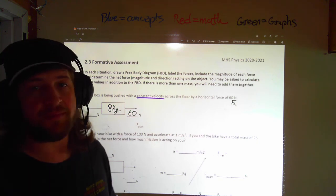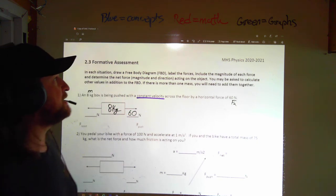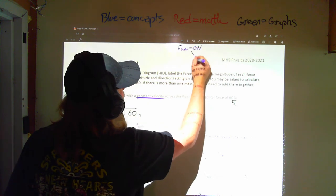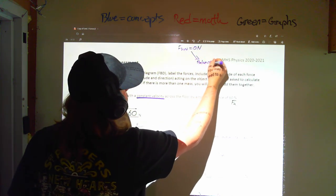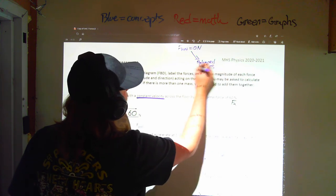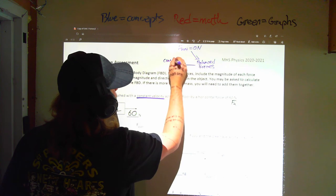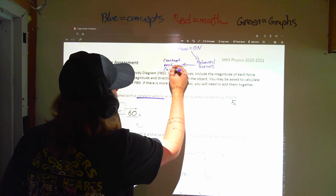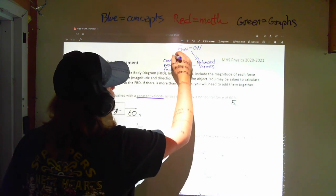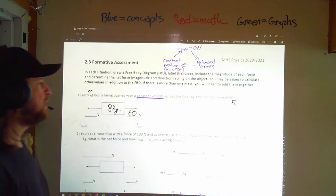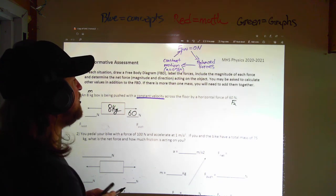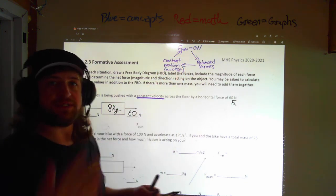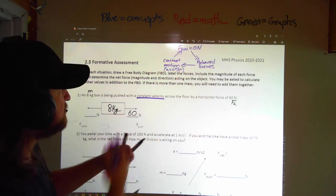That constant velocity tells us something. Earlier in the unit, we talked about the fact that if F net equals zero, then we have balanced forces. If we have balanced forces, then we have constant motion, which is also acceleration is zero meters per second squared. If we had constant motion, F net was zero. So what that tells us is that if we have constant motion, constant velocity is constant motion. That means F net has to be zero newtons. If we have constant velocity, constant motion, F net is zero.